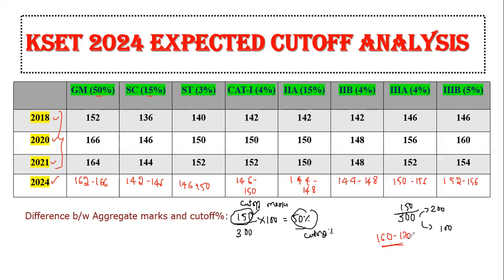Once the KSET exam is done, several steps will be followed. After the examination, within two to three weeks they'll release the tentative key answer. After that, they'll give some time for objections. Following objections, they'll revise the key answers and release the final key answers. After that, they'll release the cutoff, and only after the cutoff will they release the result.